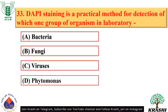Question number 33. DAPI staining is a practical method for detection of Phytomonas in the laboratory — option D. Phytomonas is a genus of trypanosomatids that infect plant species.